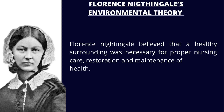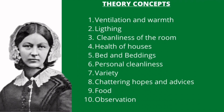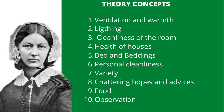Now let's talk about the constructs of the theory. Florence Nightingale's Environmental Theory has about 10 constructs as follows: ventilation and warmth, lighting, cleanliness of the room, health of houses, bed and beddings, personal cleanliness, variety, chattering hopes and advices, food, and observation. We are going to be considering each of these 10 concepts in today's tutorial.